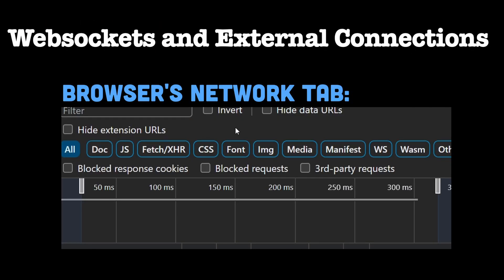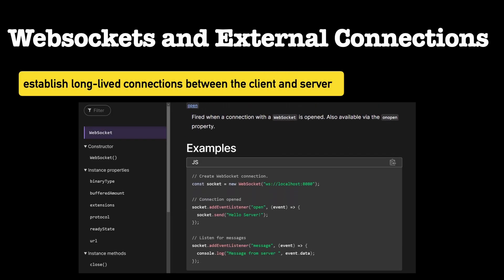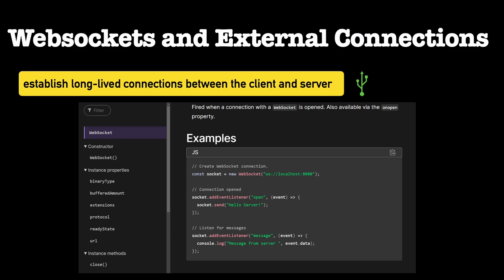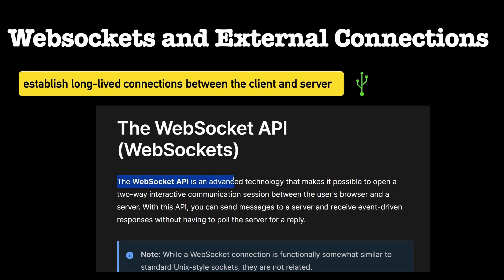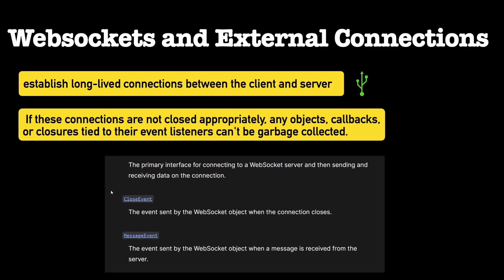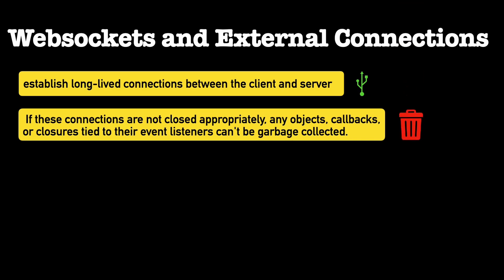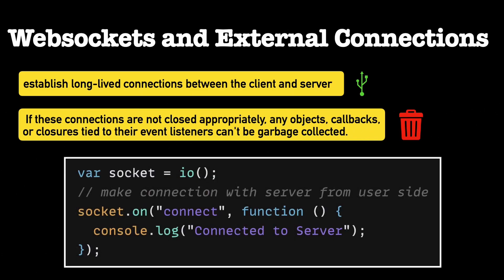Number five is WebSockets and external connections. WebSockets, as well as other persistent external connections like server-sent events or long polling, establish long-lived connections between the client and the server. While these connections are essential for real-time applications, they can lead to memory leaks if not managed properly. If these connections are not closed appropriately, any objects, callbacks, or closures tied to their event listeners can't be garbage collected.